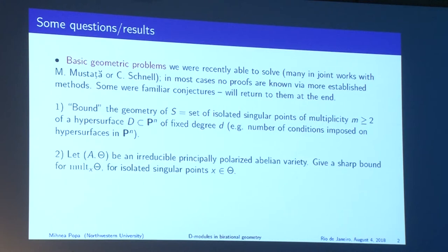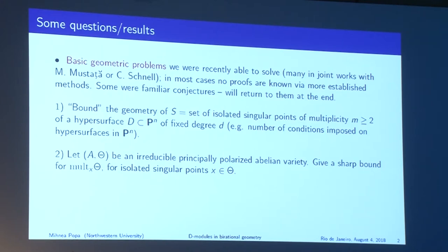Of a similar flavor, related to multiplicities, we can give an optimal bound for the multiplicities of points on theta divisors on principally polarized abelian varieties when these singularities are isolated, and also have a proposal for how to do this in general. This is a problem with a pretty long history.